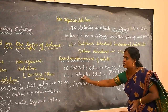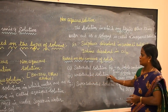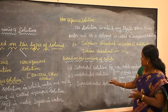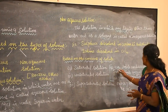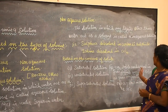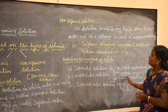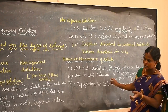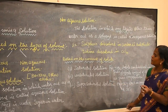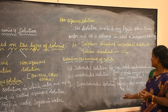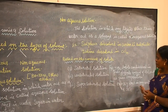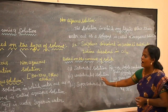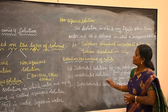Next, let us see unsaturated solutions. An unsaturated solution is one where less solute is dissolved compared to the saturated solution. For example, 10 grams, 20 grams, or 30 grams of sodium chloride dissolved in 100 grams of water at 25 degrees centigrade forms an unsaturated solution.